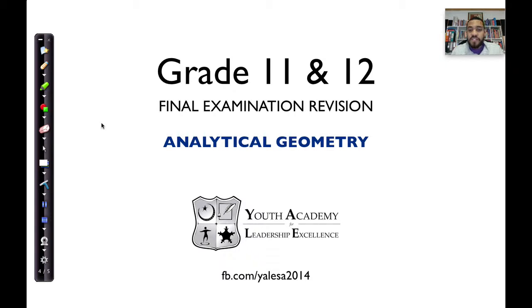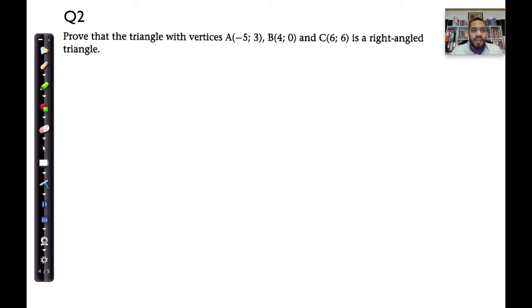We're continuing with final exam revision, analytical geometry. We're now moving on to question number two, which reads as follows. Prove that triangle with vertices A, B, and C, which are (-5, 3), (4, 0), and (6, 6) respectively. Prove that these form a right-angled triangle.